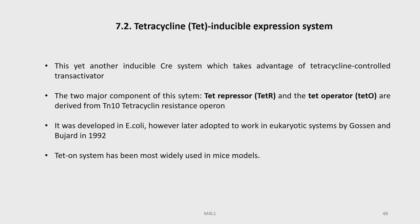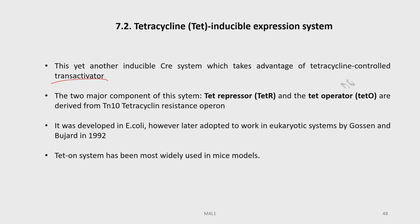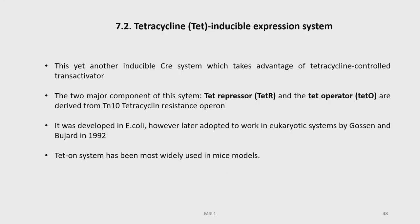The TET-inducible system works similarly and takes advantage of the tetracycline-controlled transactivator. The two major components are the TET repressor (TET-R) and the TET operator, derived from the tetracycline resistance operon. This was developed originally in Nicolai but has been adopted to work in eukaryotic systems by Gossen and Bouzard in 1992.